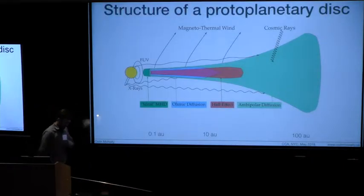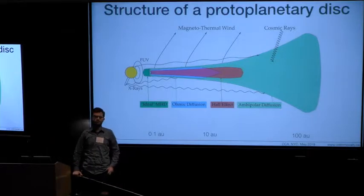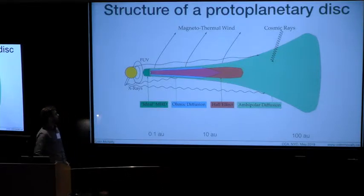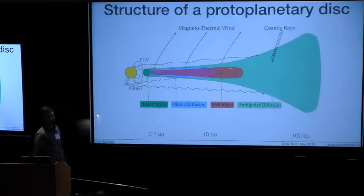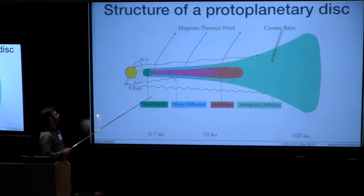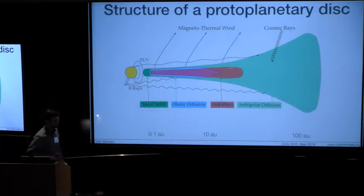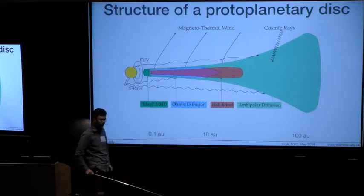So we start from a model of the structure of a protoplanetary disk. The driving thing behind what's happening in the field these days is understanding the non-ideal MHD effects and the fact that the disk has a very hard time being turbulent and viscously driven through the whole thing.